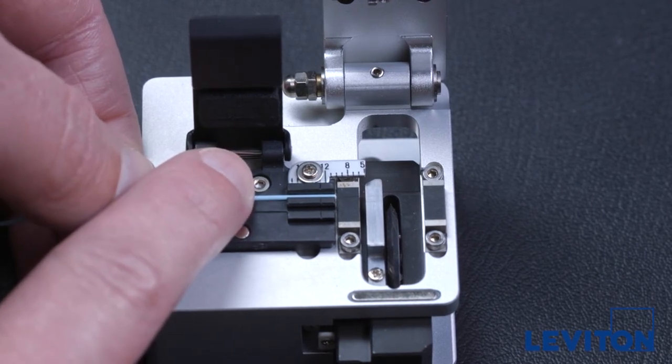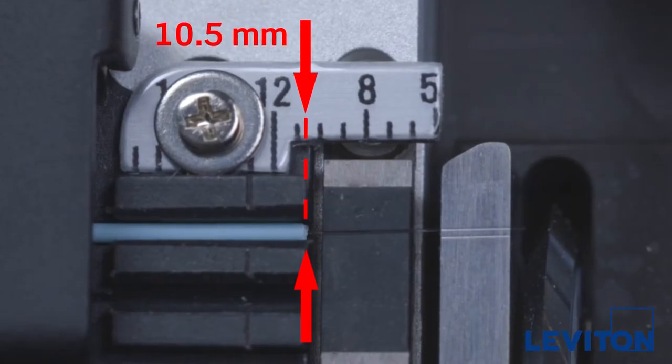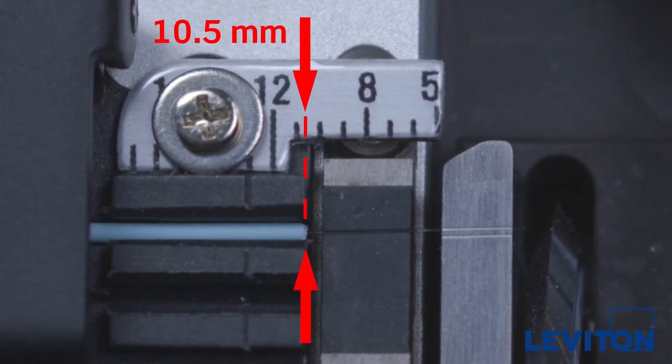The stripped fiber exposed at the end of the buffered jacket should be positioned at the 10.5 millimeter mark, located approximately at the edge of the exit point to the fiber holder.